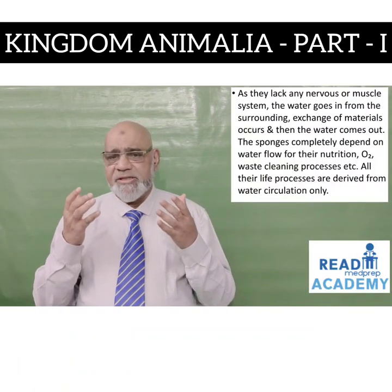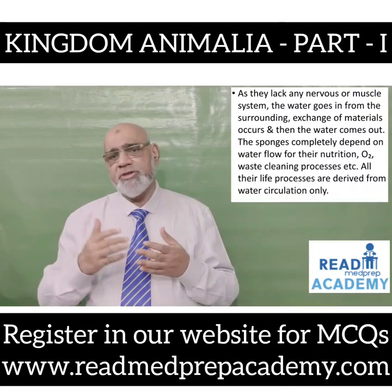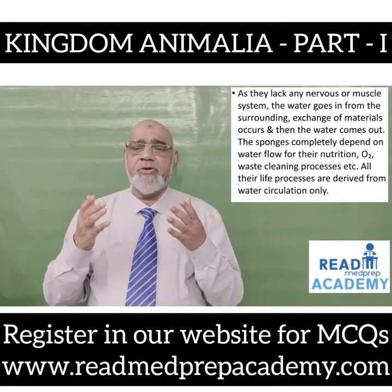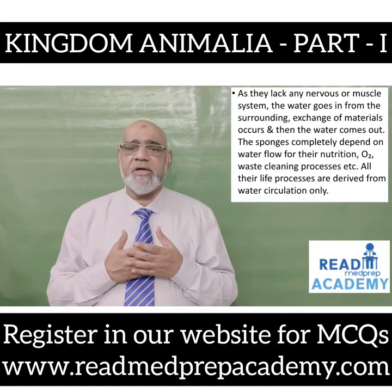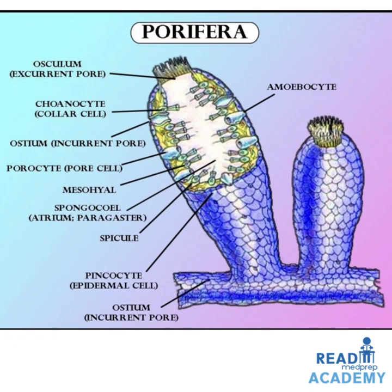As sponges lack any nervous or muscle system, the water goes in from the surrounding, exchange of materials occurs, and the water comes out. The sponges completely depend on the water flow for their nutrition, oxygen, and waste cleaning processes. In this image you can see the sponges with the ostium through which water enters, the outermost epidermal layer formed by pinacocytes, the porocytes of the pore cells, the inner layer of choanocytes, and the osculum through which the water exits.